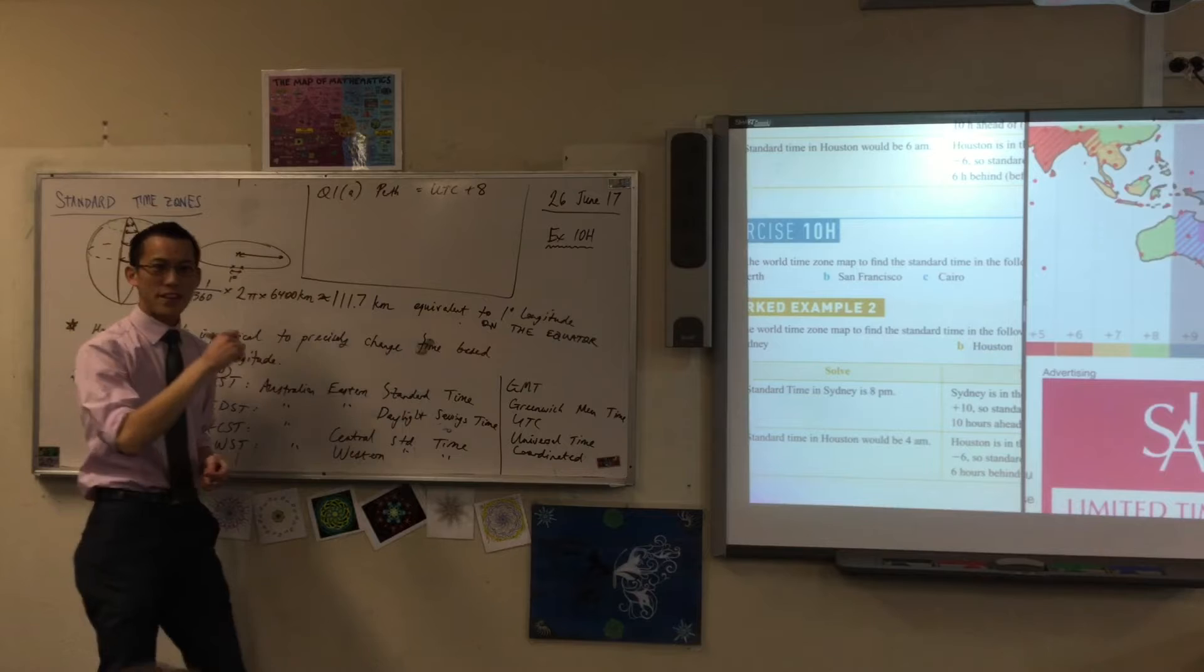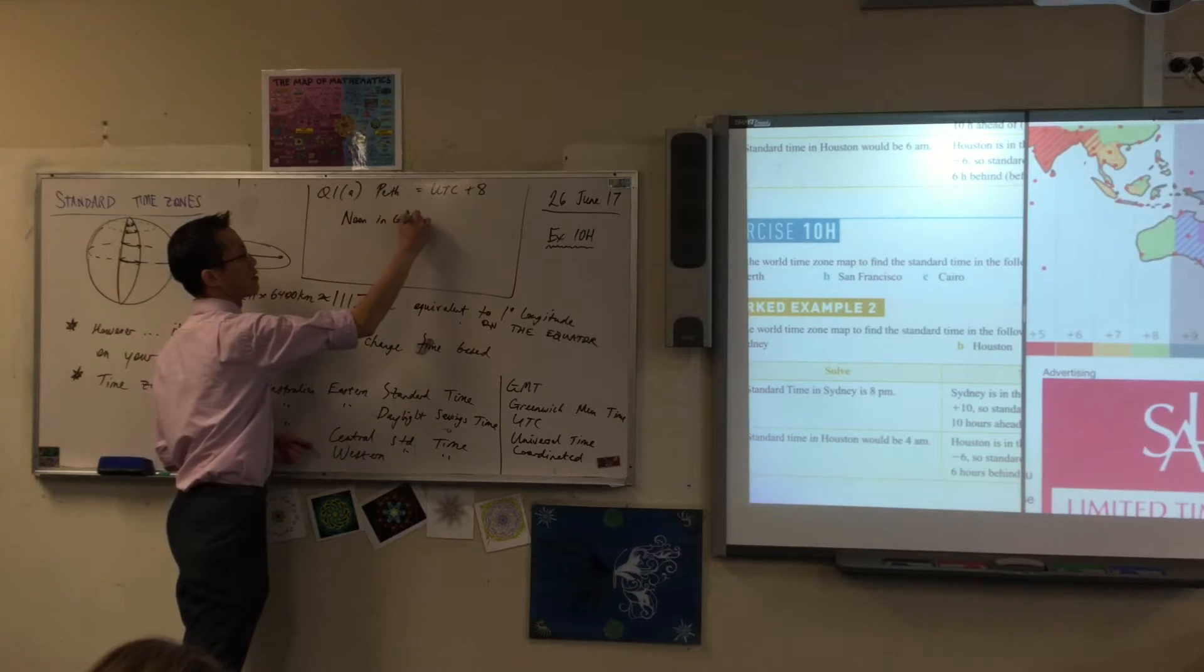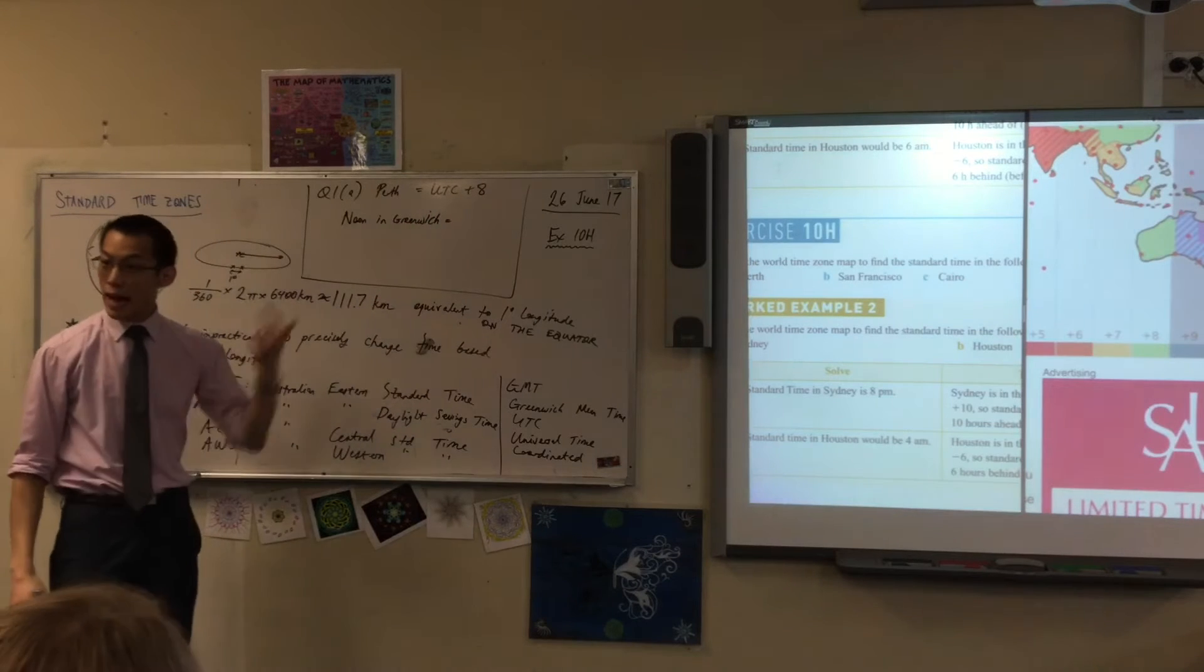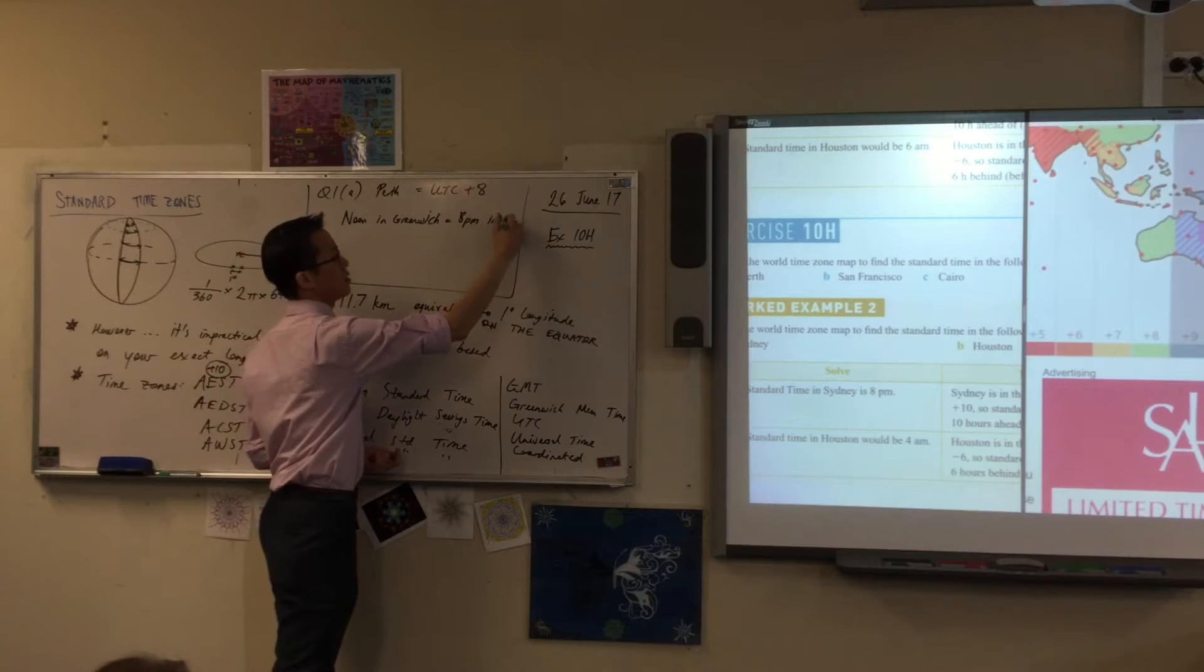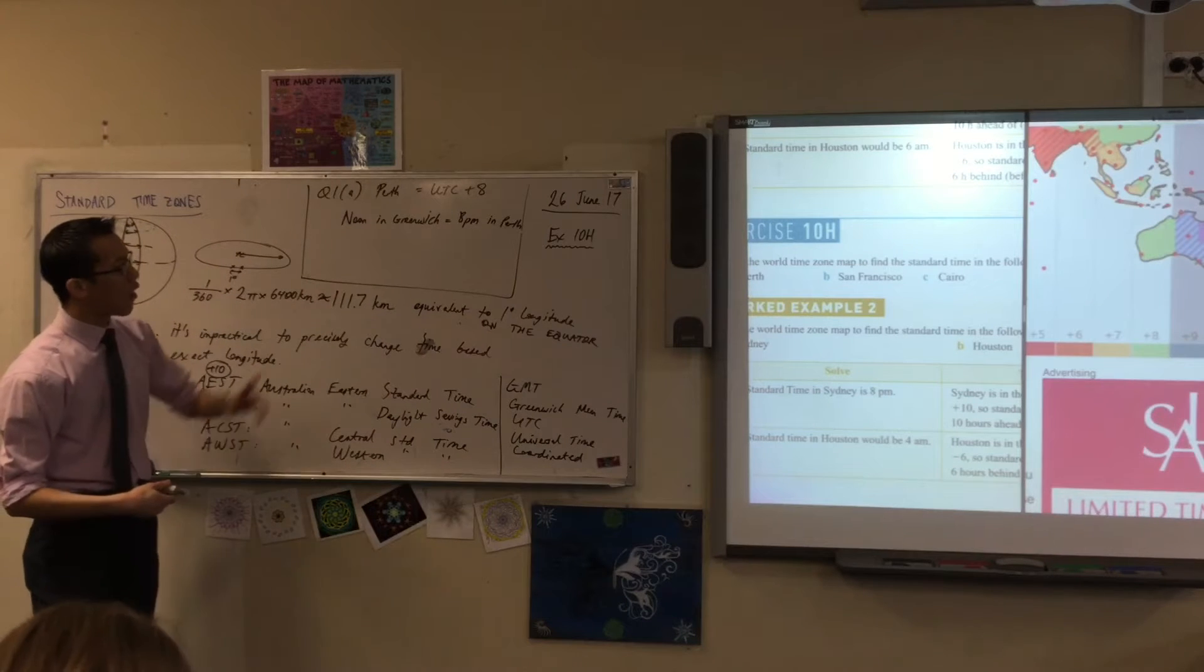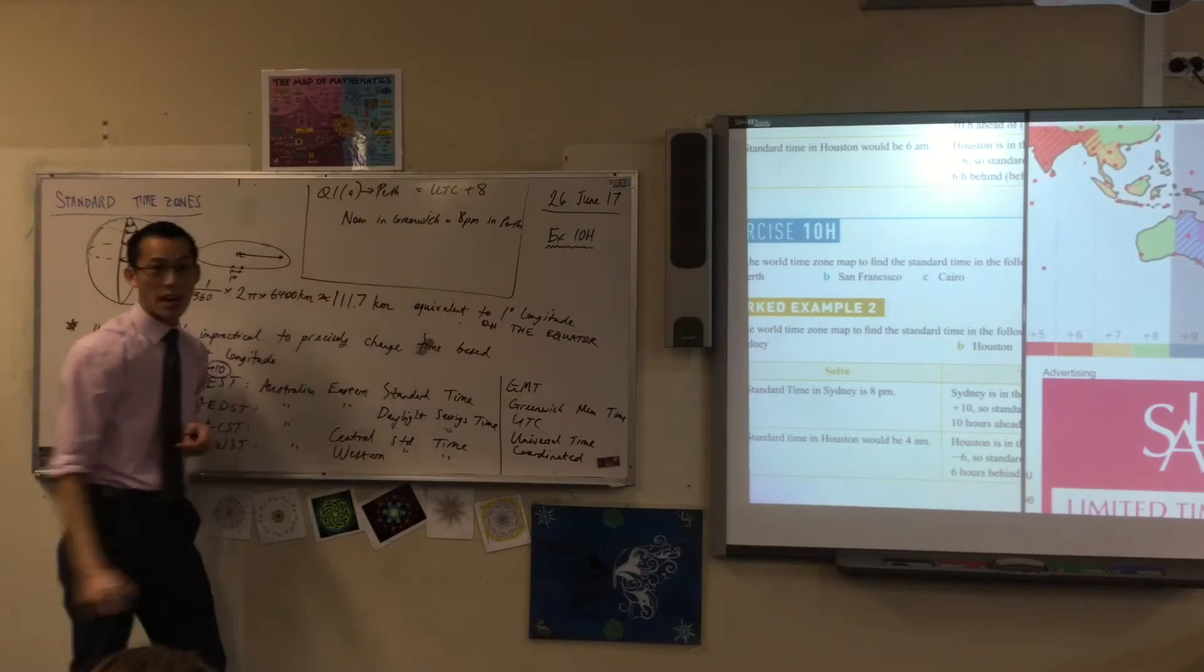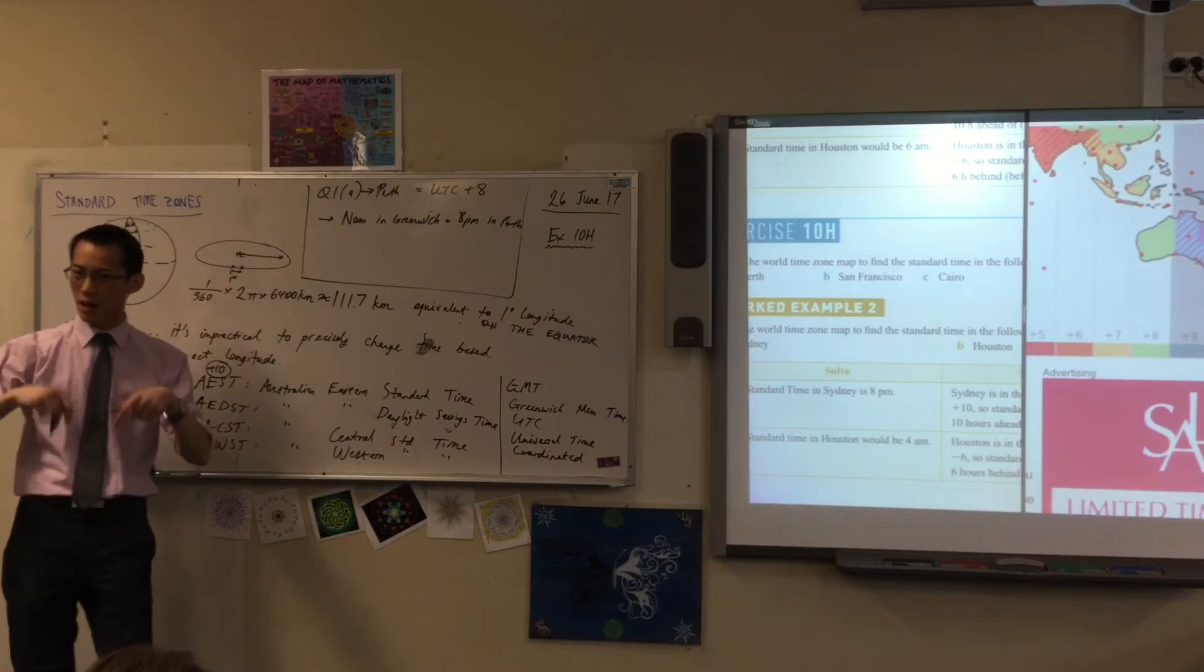So if it's noon in Greenwich, noon in Greenwich, then I have to add eight hours to that. So it's 8pm in Perth. Does that make sense? I would suggest that you write both of these things. Firstly, identify the time zone that it's in, and then secondly, apply that to whatever time it currently happens to be.